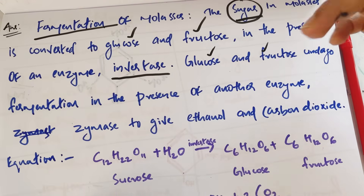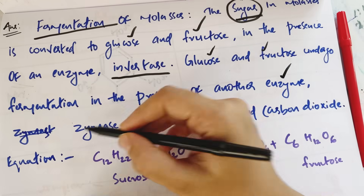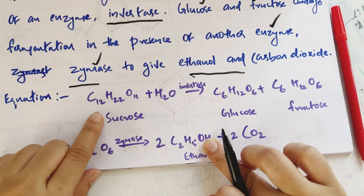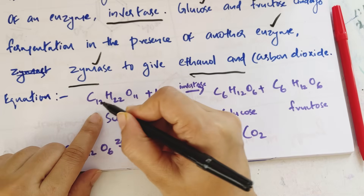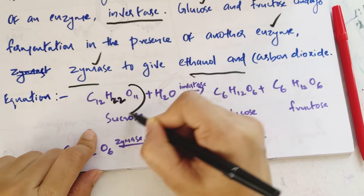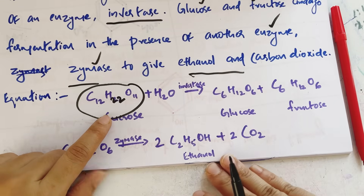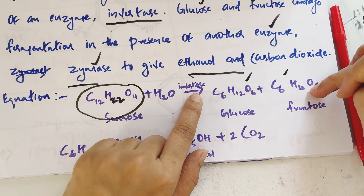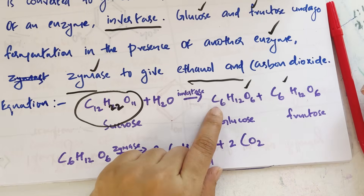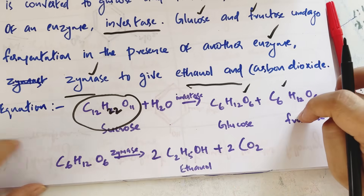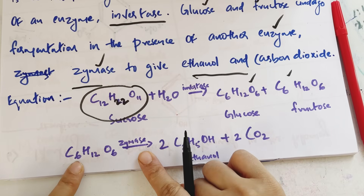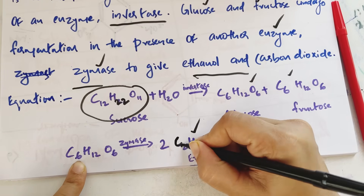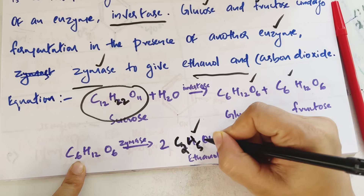In the fermentation of glucose and fructose in the presence of the enzyme zymase, ethanol (C2H5OH) is produced along with CO2. The chemical reaction: C6H12O6 → 2C2H5OH + 2CO2.